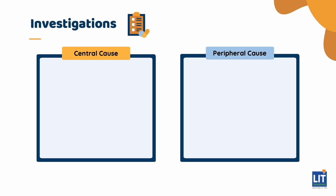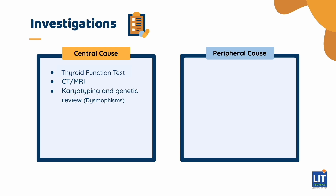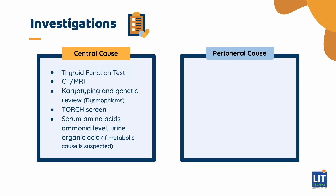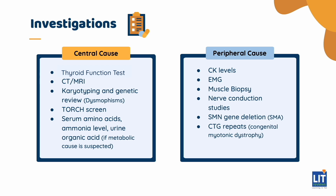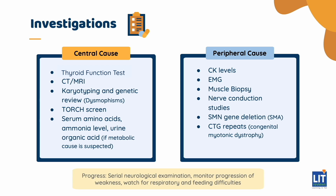Investigations depend on your assessment of whether this is central or peripheral cause. For central hypotonia: thyroid function test, neuroimaging, karyotype in the presence of dysmorphisms, TORCH screen, and specific metabolic tests like serum ammonia, serum amino acids, and urine organic acids. For peripheral hypotonia: CK levels, electromyography, muscle biopsy, and nerve conduction studies. Also look for specific genetic abnormalities, like SMN gene deletion in suspected cases of spinal muscular atrophy. Remember to do serial neurological examinations, monitor the child's weakness, and watch for respiratory and feeding difficulties.